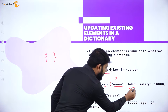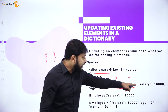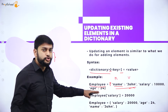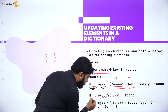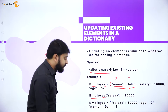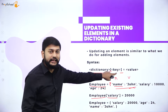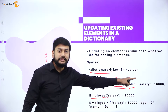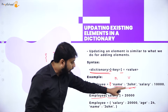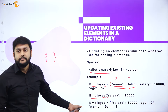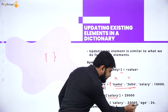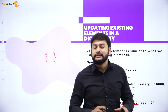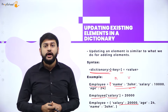In the employee dictionary I have salary and its value, and age and its value. To update, I write: employee['salary'] = 20000. I'm updating the value from 10,000 to 20,000. After executing this statement and printing employee, the salary shows 20,000 — previously 10,000, now updated. That's how you update values in a dictionary.